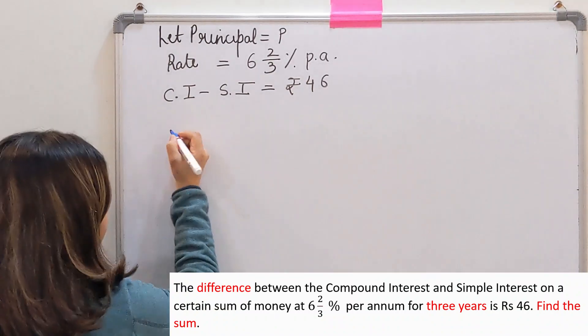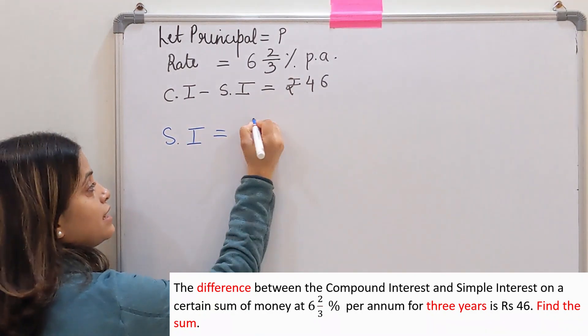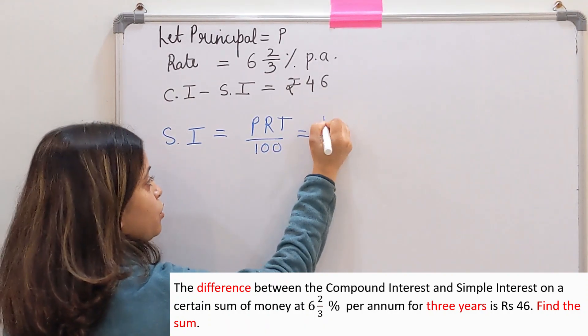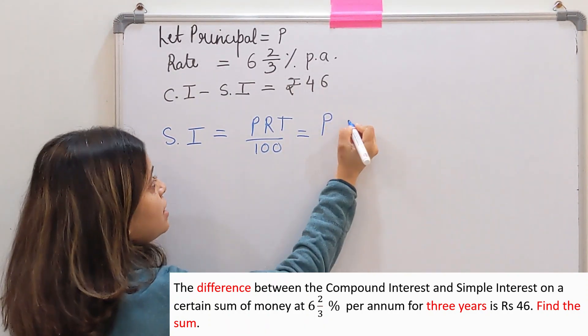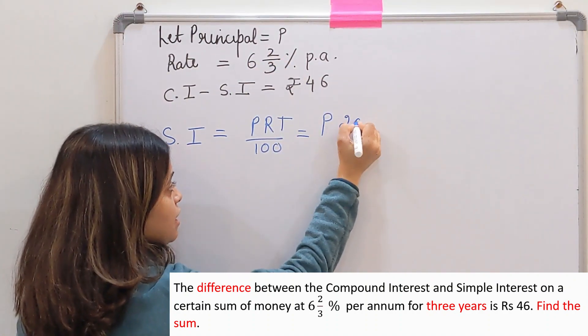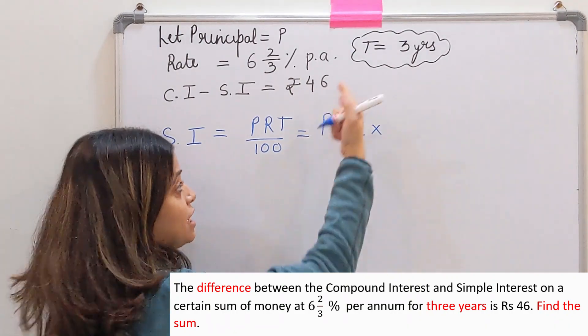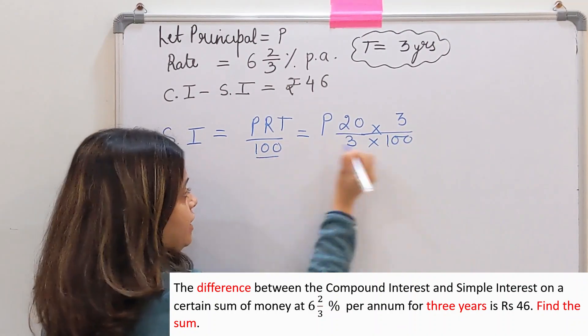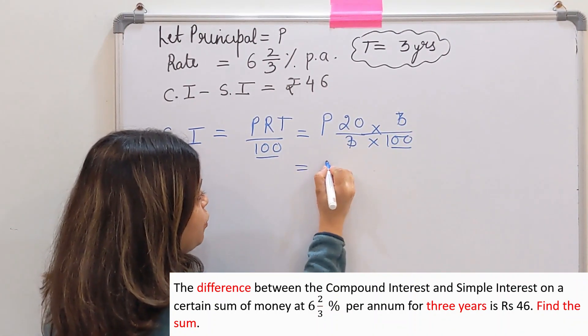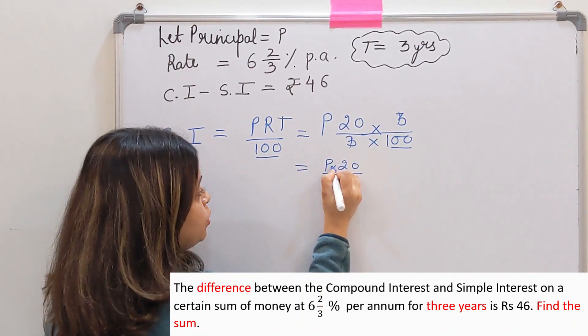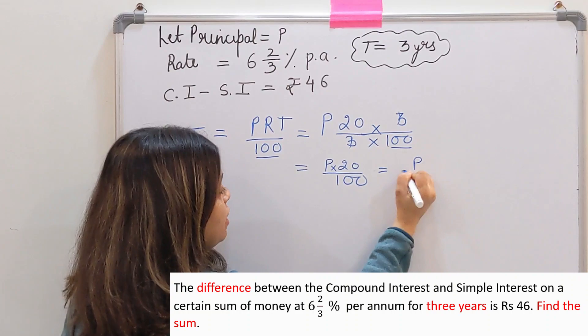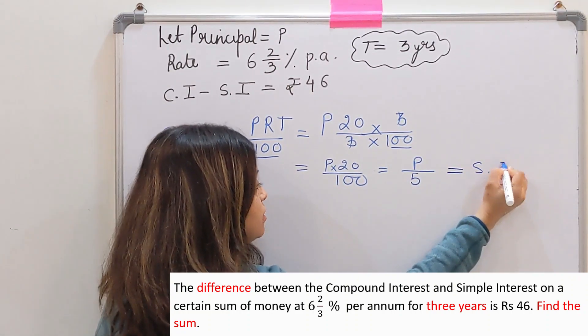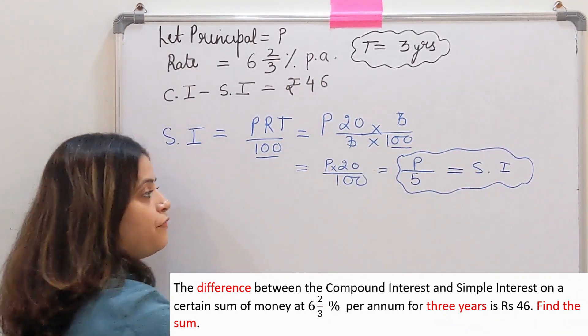Let's find the simple interest first. The formula for simple interest is P × R × T ÷ 100. Principal we don't know, we are taking it as P. Rate of interest is 6⅔ which is 20/3%. Time is three years. So it becomes P × (20/3) × 3 ÷ 100. After cancellation, this gives P × 20 ÷ 100, which is P/5. So your simple interest is P/5.